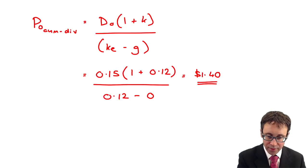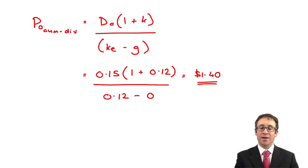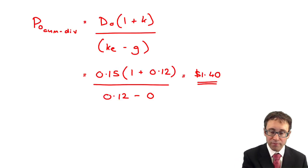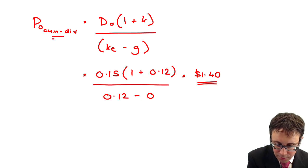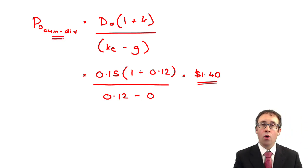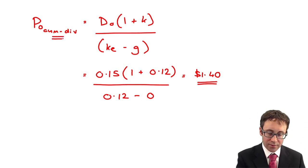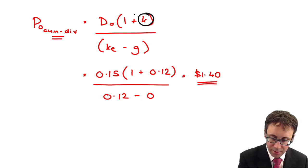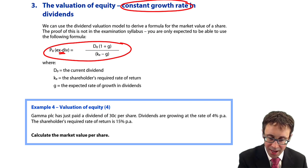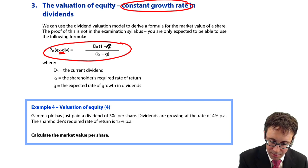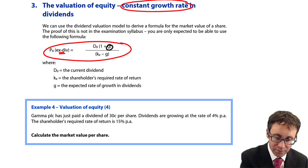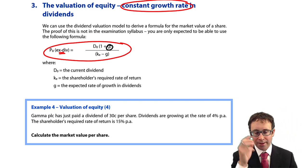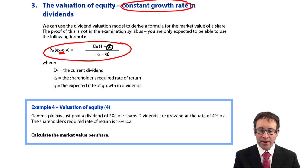Remember, in the last video we said that the cum-div price is D0 times (1 + K), divided by (KE minus G). So the big difference is that for the cum-div it's K in the numerator, and for the ex-div it's G.